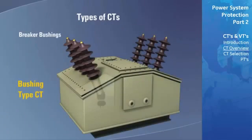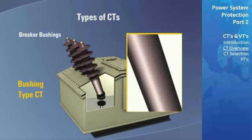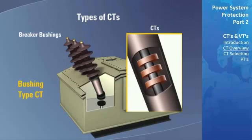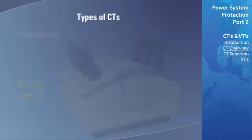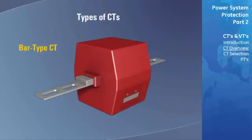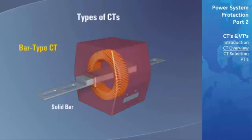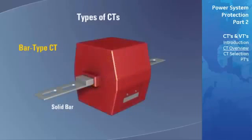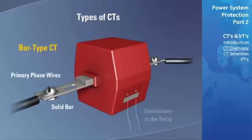A bushing-type CT refers to a CT that is built into another power system device, such as a breaker. Terminals are provided on these devices to permit connecting the CT to a relay. A bar-type CT has a solid bar that passes through the annular core to form the primary winding of the CT. The primary phase wires of the power system are then connected directly to these bars to complete the connections.